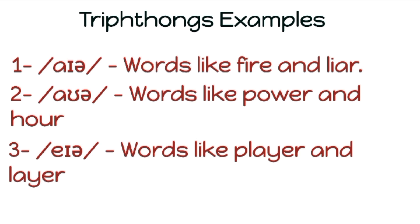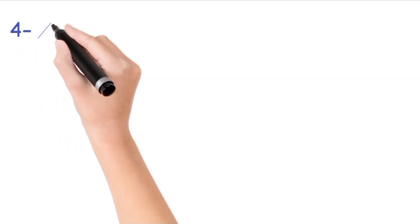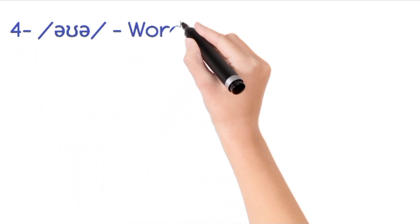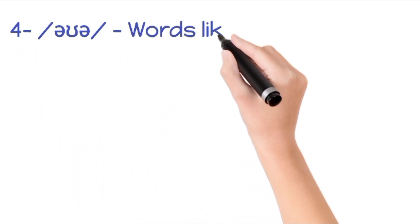So these are the sounds. Remember that in British English we don't pronounce the R at the end, so you can say 'player' and 'lyre'.